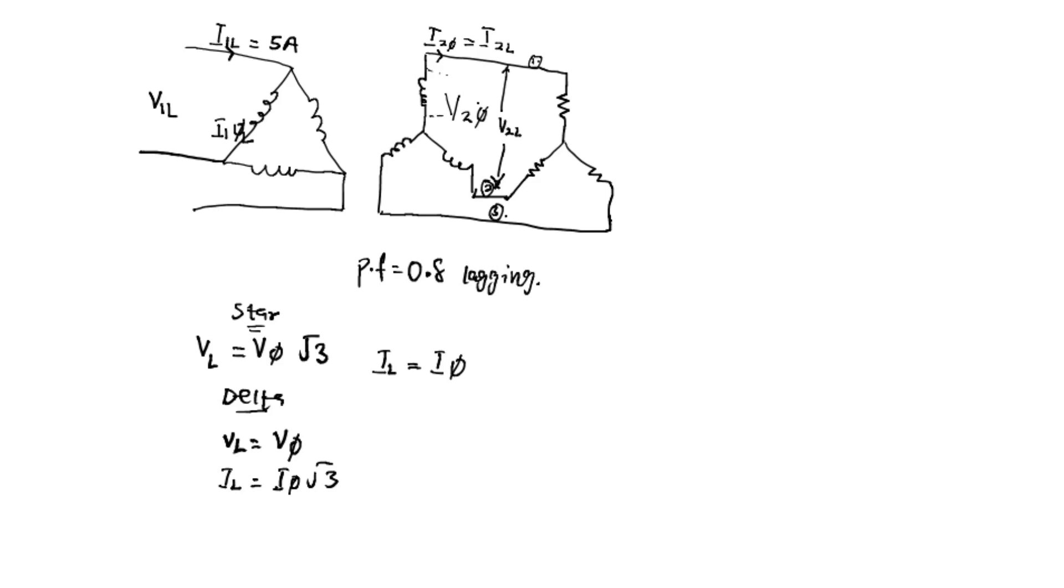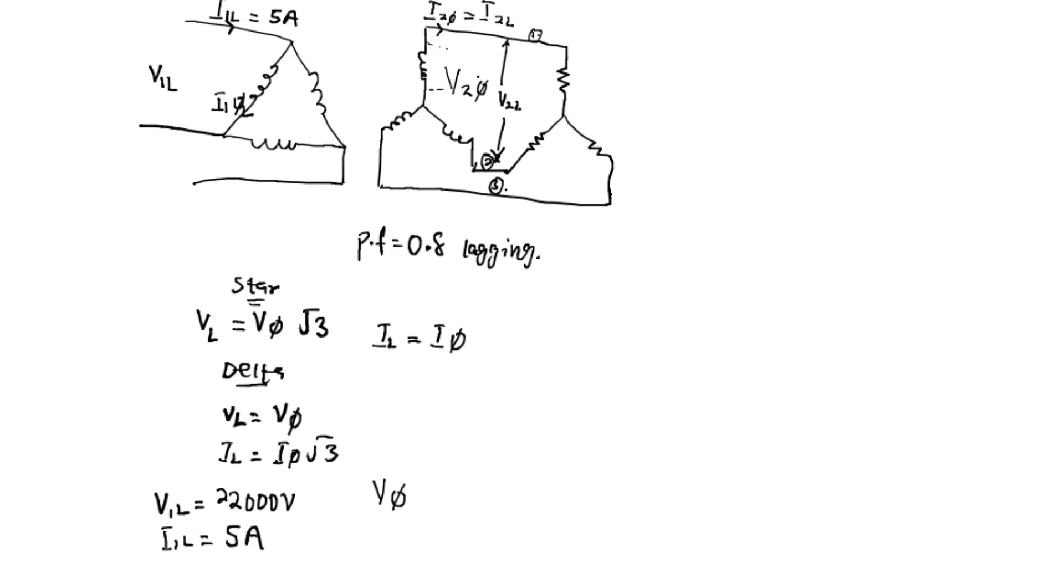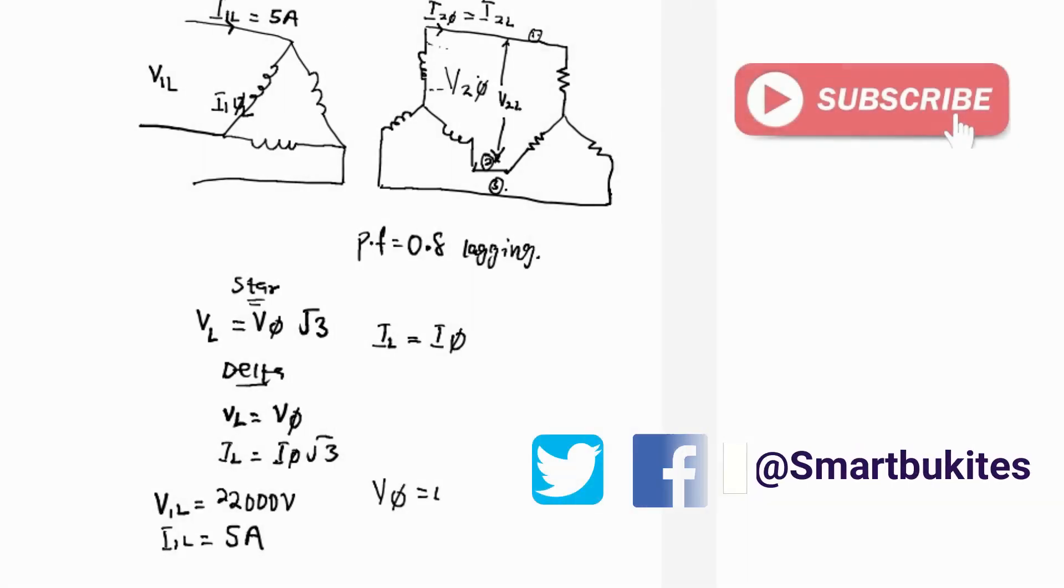From the data, we are given the line voltage of the primary is 22,000 volts, and the line current of the primary is 5 amperes. The phase voltage of the secondary is given as 400 volts.